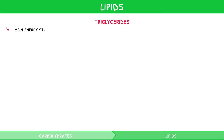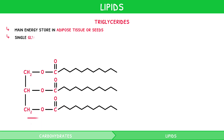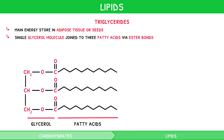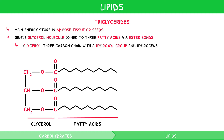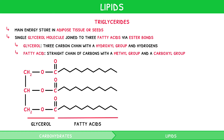Triglycerides are the main energy store in adipose tissue or seeds. They are comprised of a single glycerol molecule joined to three fatty acids via ester bonds. Glycerol is a three-carbon chain with a hydroxyl group on the right of each carbon, with hydrogens occupying the remaining bonds. A fatty acid is a straight chain of carbons with a methyl group on one end and a carboxyl group on the other. They can also be represented using a simplified diagram.